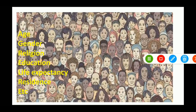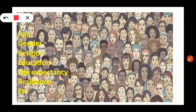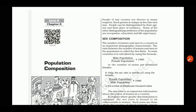All people are different from one another in terms of age, gender, religion, education, life expectancy, residence, and more. When they are living all together, they are known as population composition.